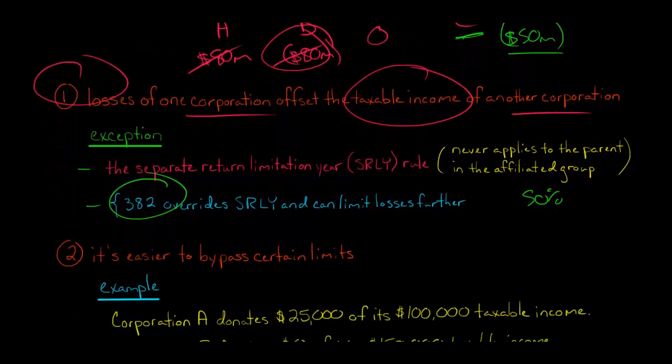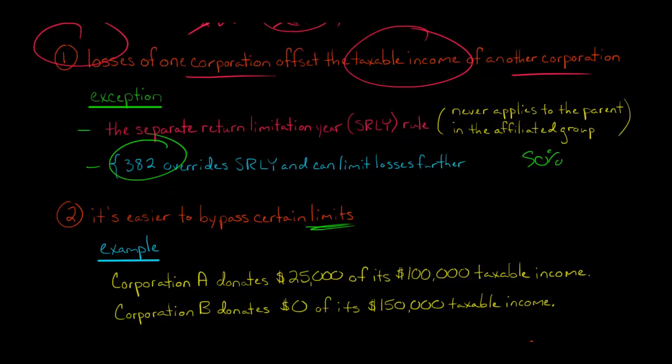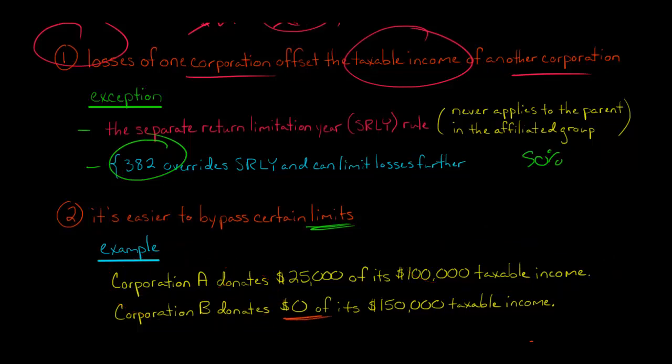Advantage number two, consolidated return. It makes it easier to bypass certain limitations, particularly when it comes to deductions, for example. So I'm going to give an example with charitable deductions. Let's say we've got one company has $25,000 charitable deduction and has $100,000 of taxable income. The other corporation, they're both part of a consolidated entity. They're both part of an affiliated group.